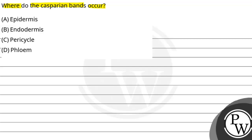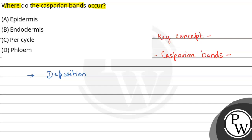So, to answer this question, let us understand the key concept. The key concept is the Casparian bands. Casparian bands kya hote hai? It is defined as the deposition of water impermeable waxy material of suberin coating.